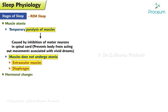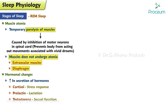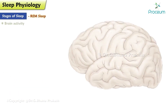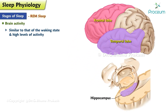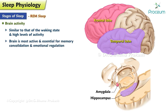During REM sleep, there is an increase in the secretion of hormones such as cortisol, prolactin, and testosterone. These hormones are involved in a range of physiological processes, including stress response, lactation, and sexual function. Brain activity during REM sleep is similar to that of the waking state, with high levels of activity in the frontal and temporal lobes, hippocampus, and amygdala. It is the stage of sleep in which the brain is most active and is essential for memory consolidation and emotional regulation.